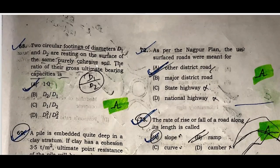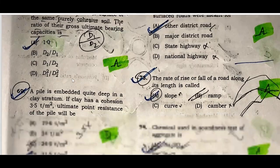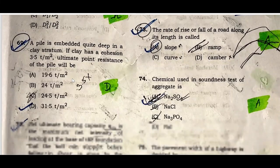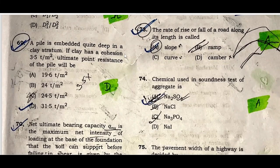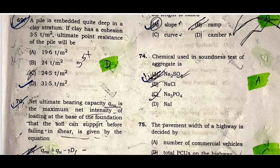Question sixty-eight: Two circular footings of diameters D1 and D2 resting on the surface of the same purely cohesive soil — the ratio of their gross ultimate bearing capacity is the same, that is one. Question sixty-nine: A pile embedded in clay with cohesion 3.5 ton per square meter has an ultimate point resistance of 31.5. Option D is correct.